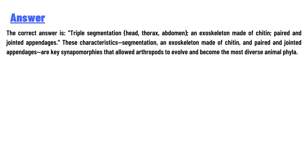The correct answer is triple segmentation — head, thorax, abdomen — exoskeleton made of chitin, and paired and jointed appendages. These characteristics — segmentation, exoskeleton made of chitin, and paired and jointed appendages — are the key synapomorphies that allowed arthropods to evolve and become the most diverse animal phyla.